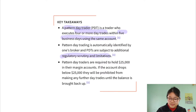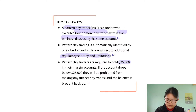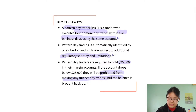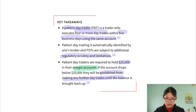Namely, the limitation is that if you have less than $25,000 in your account, you will be prohibited from making any further day trades until the balance is over that amount. Also note that this only applies to margin accounts, so cash accounts aren't subject to the PDT rule.